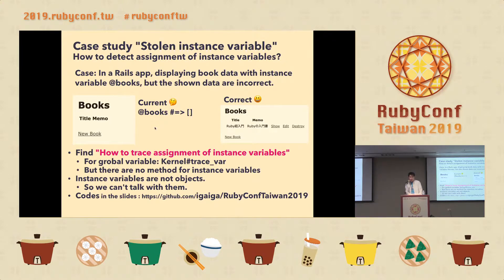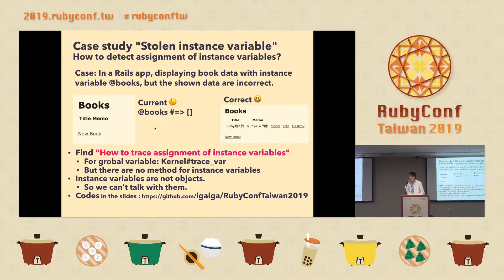For global variables there is the Kernel#set_trace_var method, but there is no equivalent method for instance variables. Instance variables are not objects, so we can't talk with them directly. My code is on GitHub — my page is iga_iga, repository rubyconf_taiwan_2019.